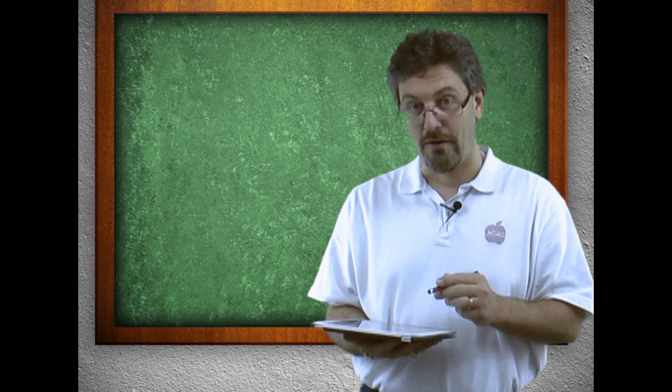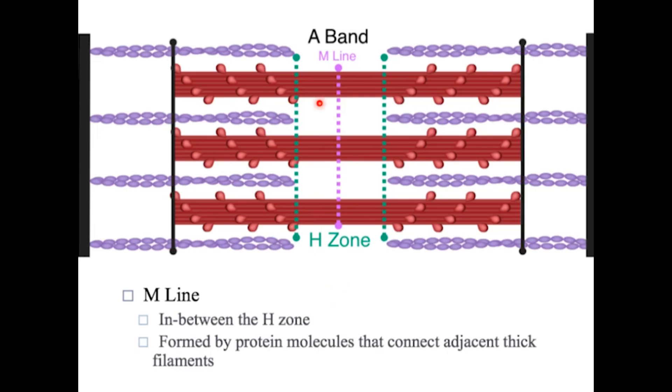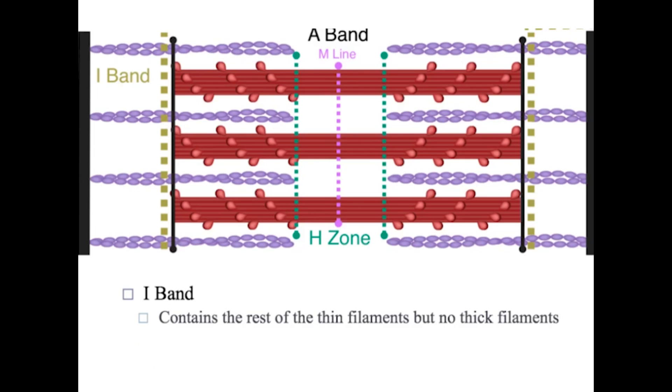The M line goes right through the middle. It goes right through the middle of the H zone. It's going to go straight down the middle.